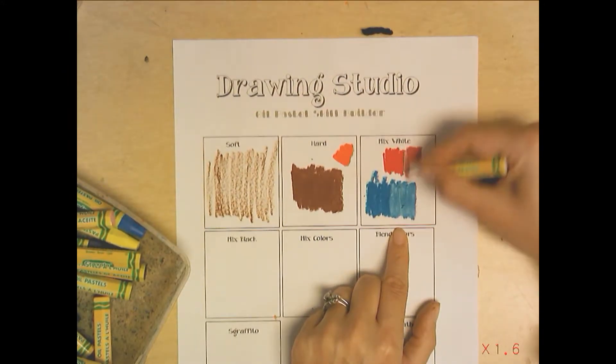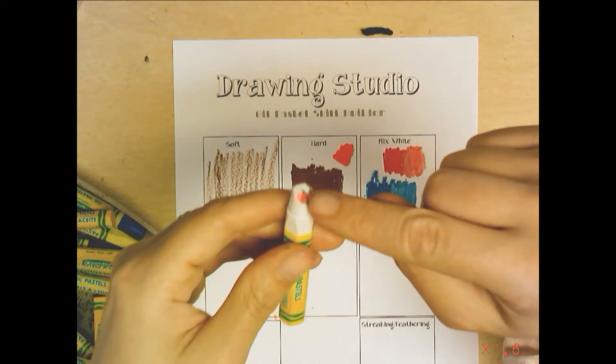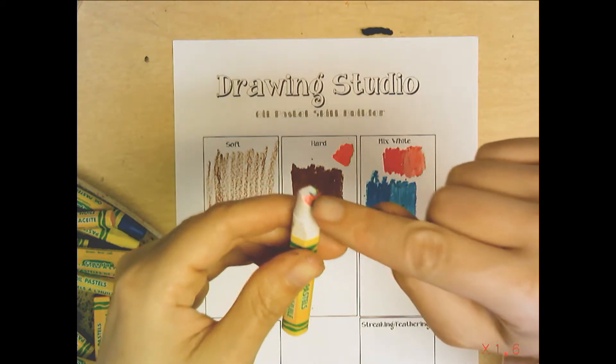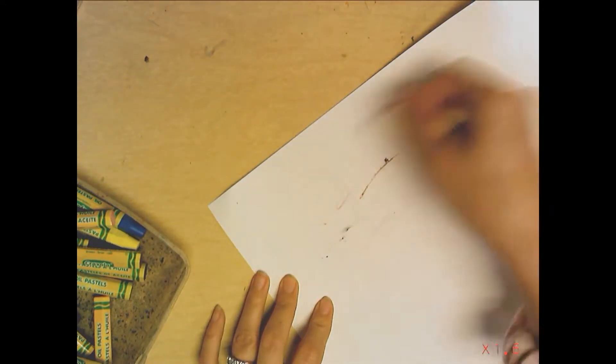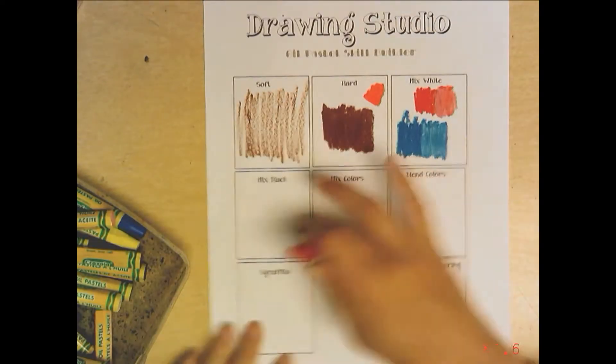The tricky thing with oil pastel, which you probably just saw right there, is the white and all the colors can pick up the other colors and stay on your stick. So sometimes what you might want to do is get scrap paper and kind of clean it off before you color, that way it's nice and clean.